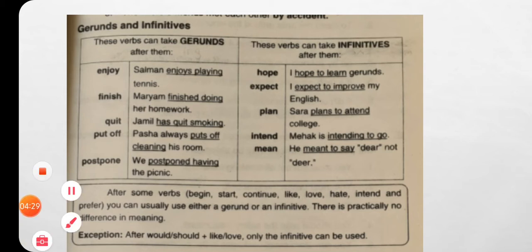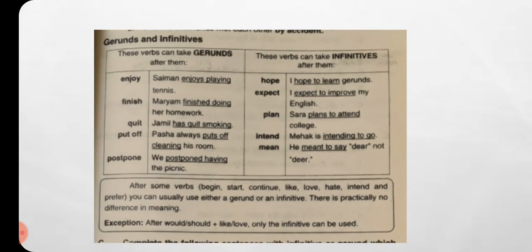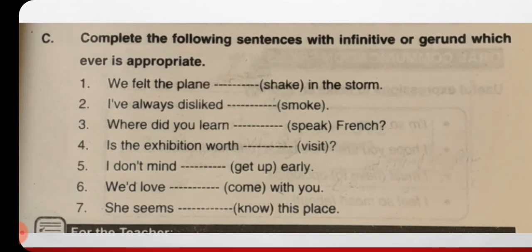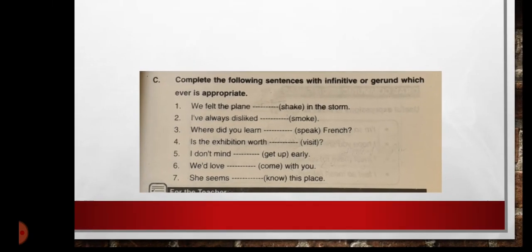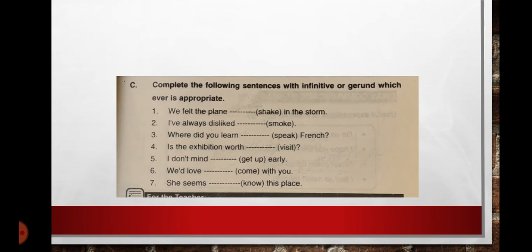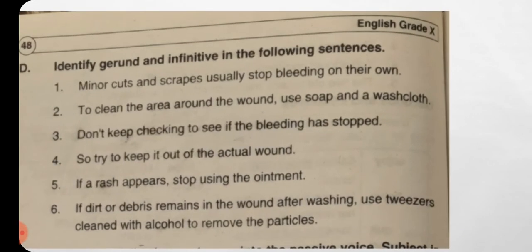Now we have: complete the following sentences with the infinitive or gerund, whichever is appropriate. You are to fill in the exercise using the correct form. For example: 'We felt the plane shaking in the storm.' Then: 'I have always disliked smoking.' And: 'Where did you learn to speak French?' You will decide which one — gerund or infinitive — is appropriate in each case.